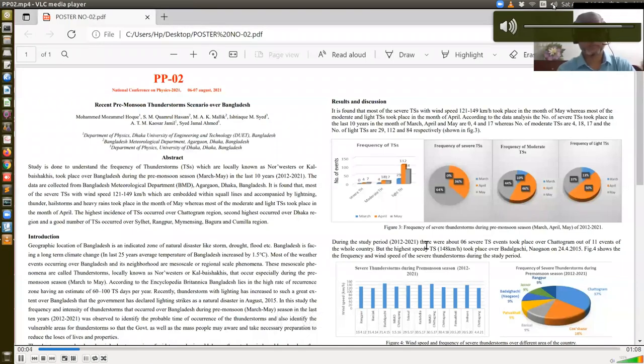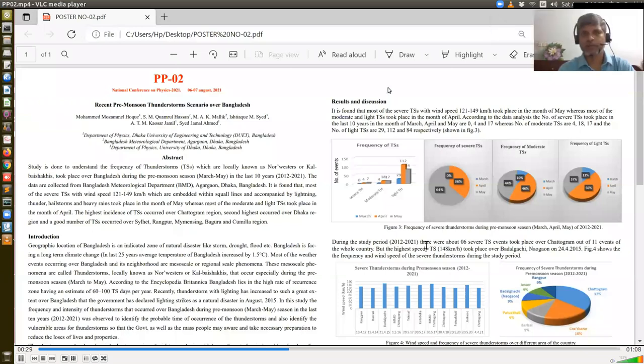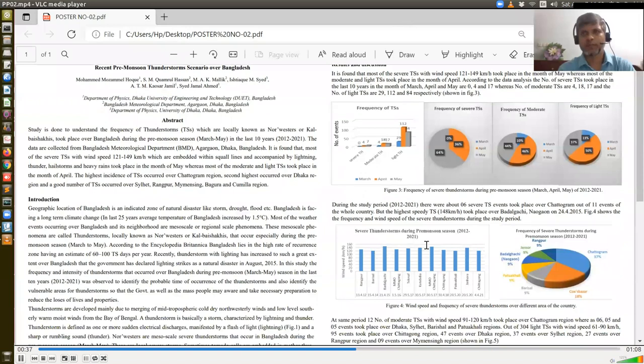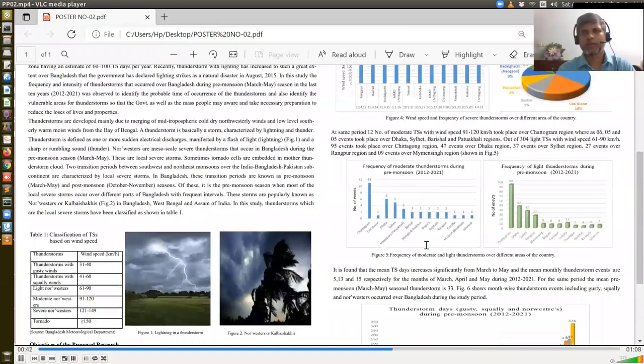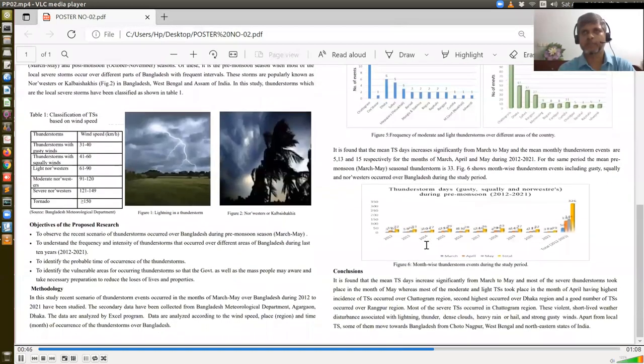Assalamu alaikum, this is Mohammad Mojammilhaq, PhD student, Department of Physics, DUET, Gazipur. Welcome you all to my poster presentation, poster number two, titled Recent Premonsoon Thunderstorms Scenery over Bangladesh. This study is done to understand the frequency of premonsoon thunderstorms over Bangladesh, which are locally known as Kalbaishakis. It is found that the most severe thunderstorms took place in the month of May, whereas most of the moderate and light thunderstorms took place in the month of April. The highest incidence of thunderstorms occurred over Chittagong region, and the next are Dhaka, Sylhet, Rangpur, Mymensingh, Comilla, and Bogura region respectively. The main objective of this study is to identify the thunderstorm trend area and the probable time of occurrence of thunderstorms, so that the government as well as the people become aware of it and take necessary steps. Thank you all.